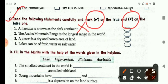Second one, Andes mountain range is the longest range in the world. It's a right one, so you will put a tick mark.